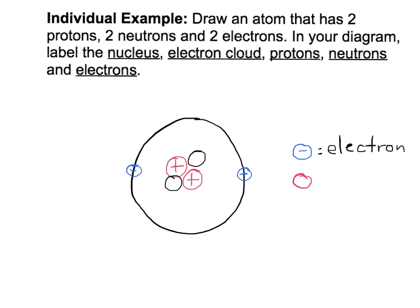The red circle that has the plus in it is a proton.